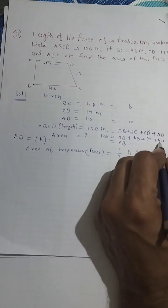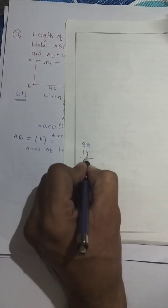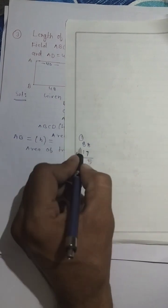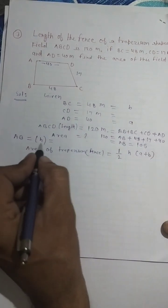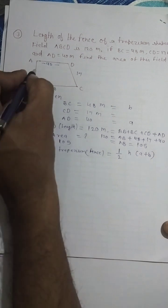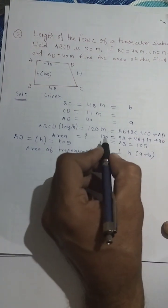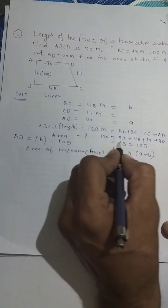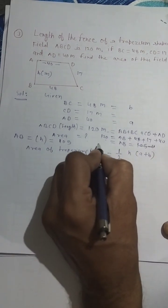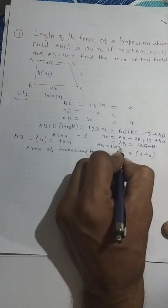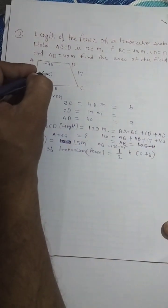40 plus 48 equals 88, plus 17 equals 105. So AB equals 120 minus 105, which equals 15 meters. This is our height H.